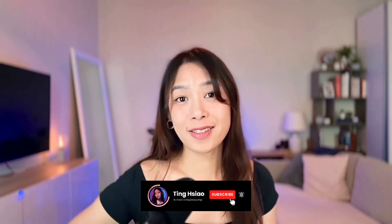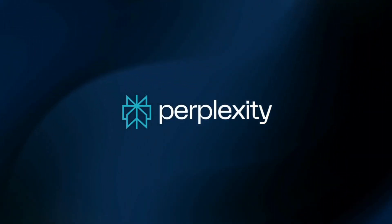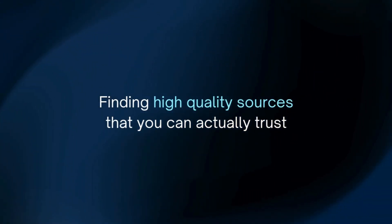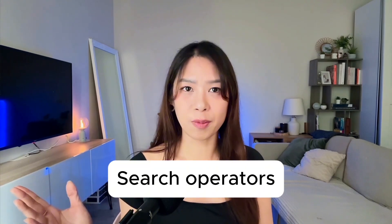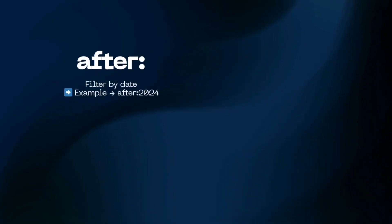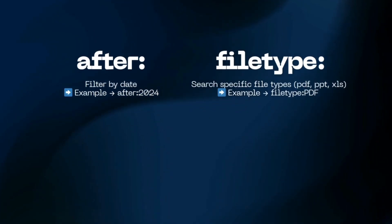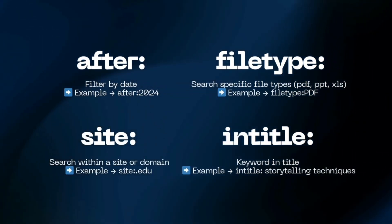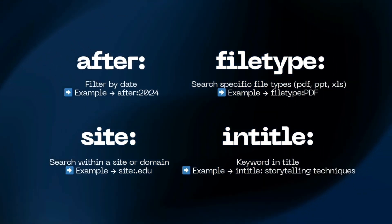Let's get started with tool number one: Perplexity. Most people just use it for quick answers, but its real power is in finding high-quality sources you can actually trust. To unlock that, you want to use search operators — special phrases that help you filter results. Here are some search operators you can include: for example, file type, filter by website, specific topics, or words in the title.